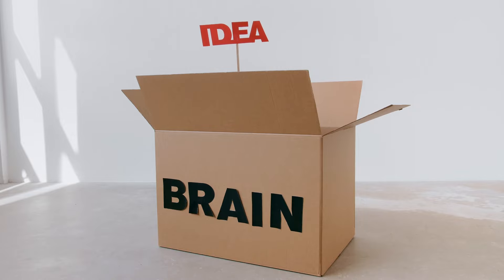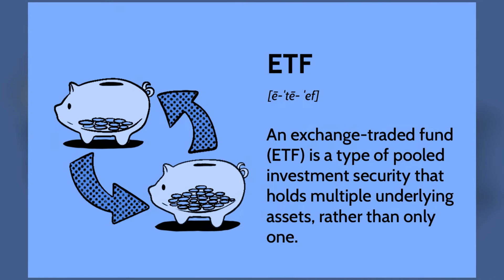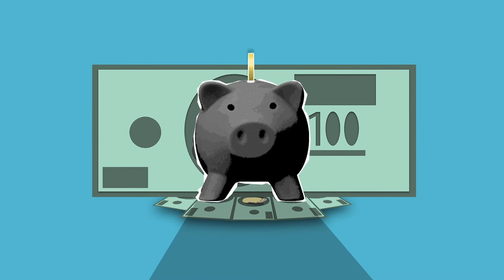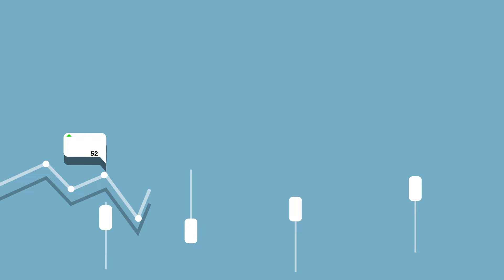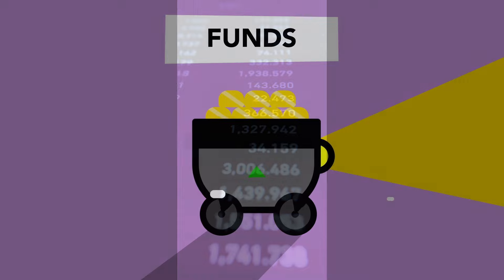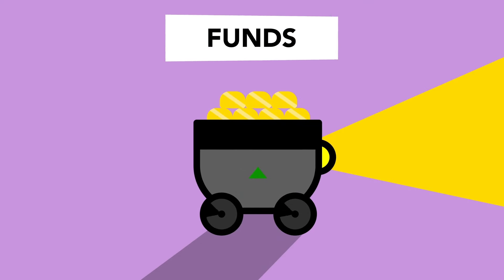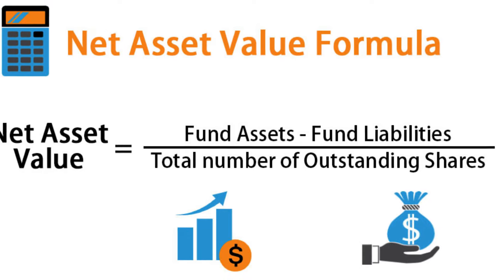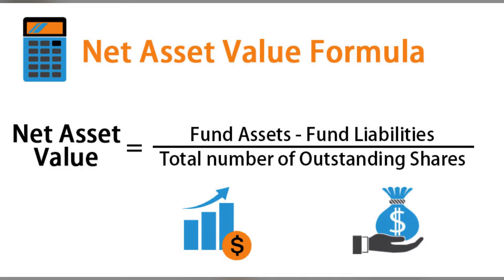Now let's talk about index ETF and index fund. If you want to buy or sell a stock in the market, there is an index ETF, and that price changes like a stock. But an index fund is a mutual fund, so that is NAV — Net Asset Value — and that is the price change at the end of the market day.